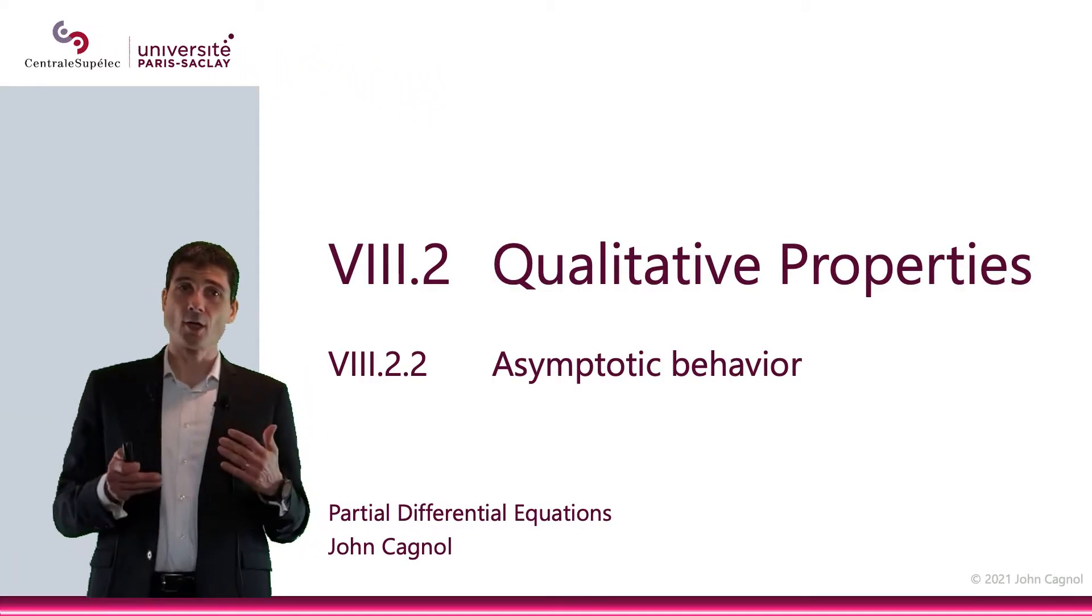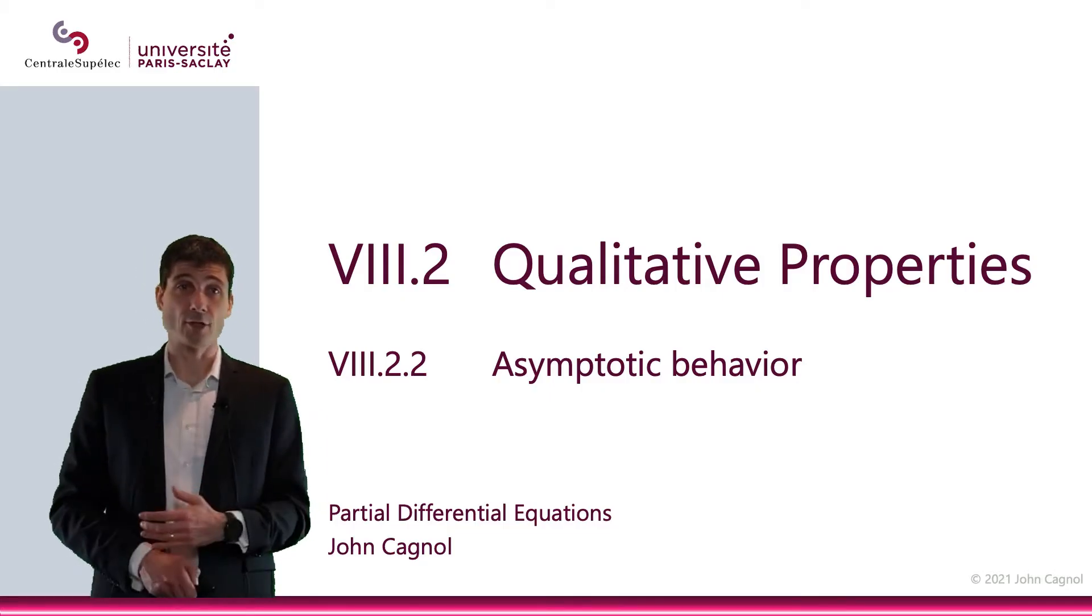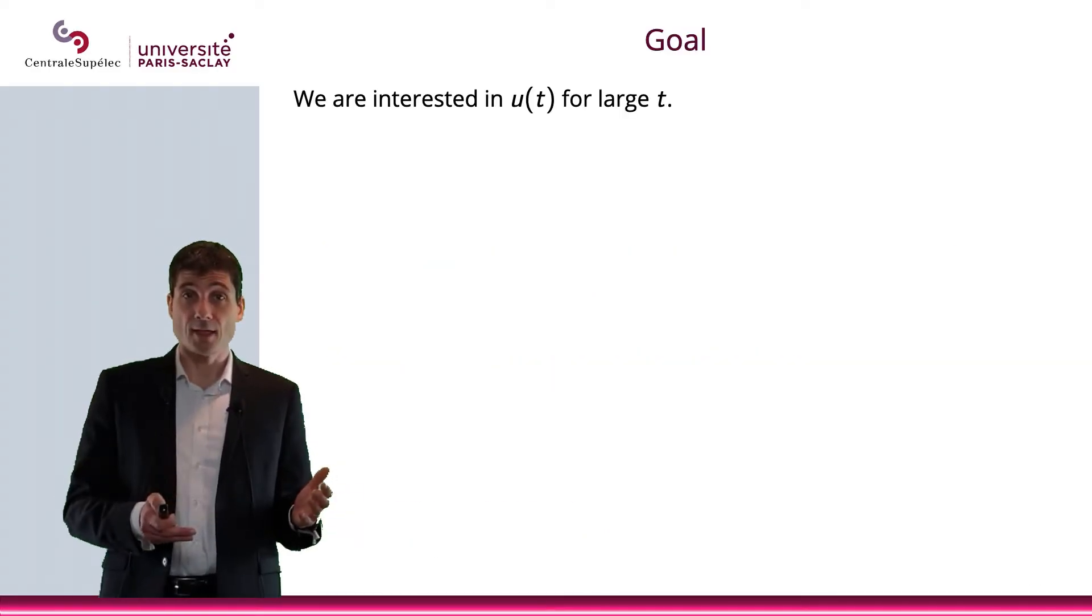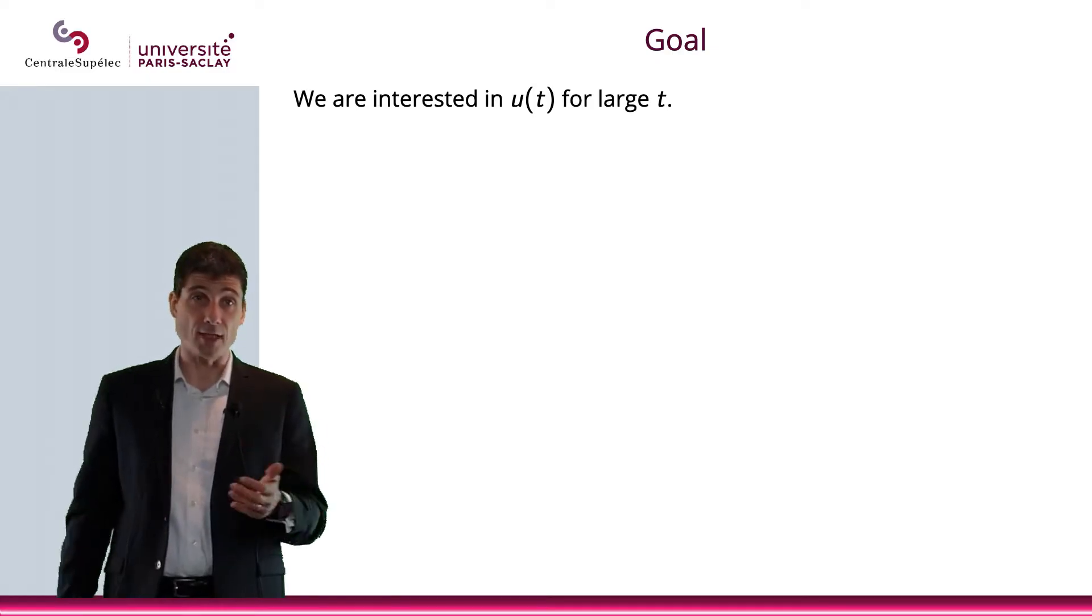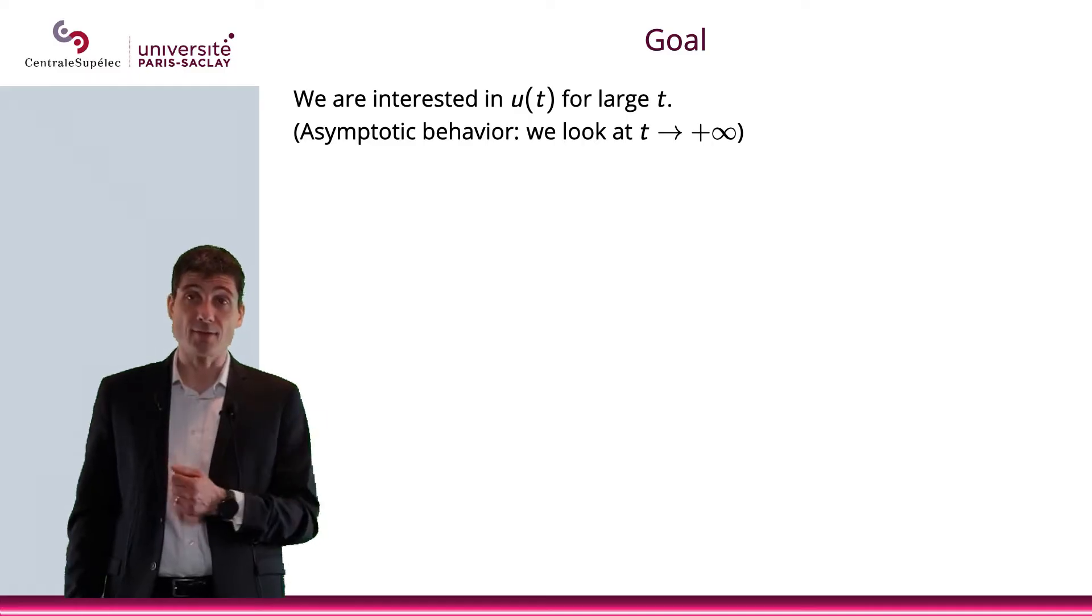In this video, we're going to talk about the asymptotic behavior of the solution to the heat equation. We're interested in looking at the value of ut for large values of t. In other words, what happens when t goes to plus infinity?